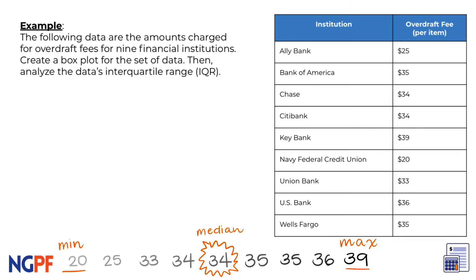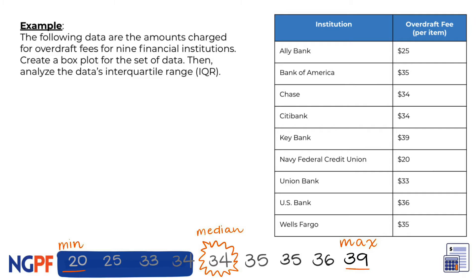Next we can find the quartile points. The first quartile is the median of the data points to the left of the median. Since there are two numbers in the middle here, we can find the average of these two: 25 plus 33 divided by 2 is 29.